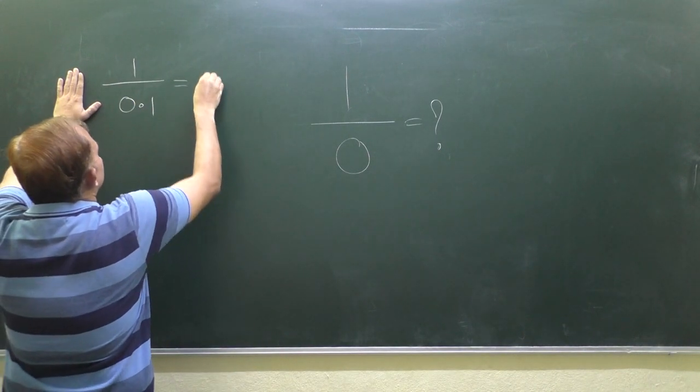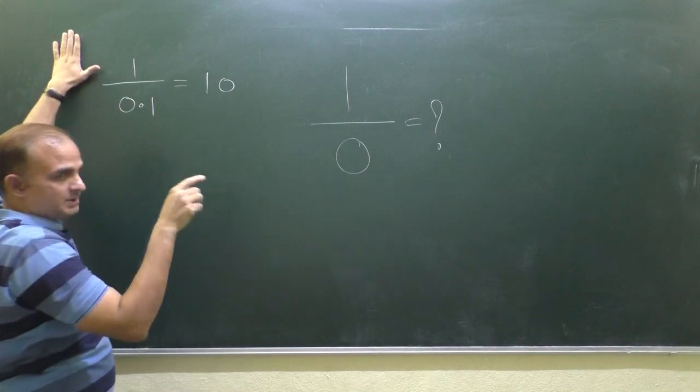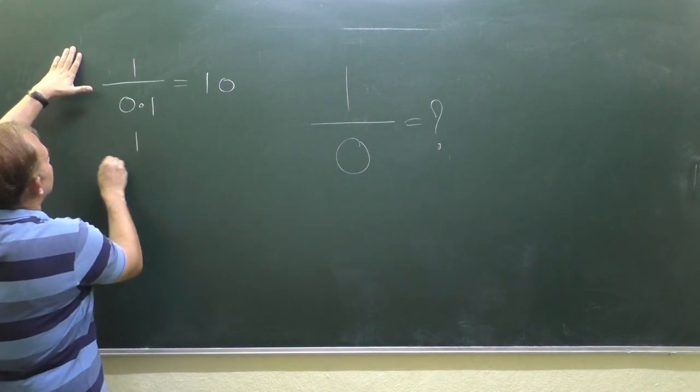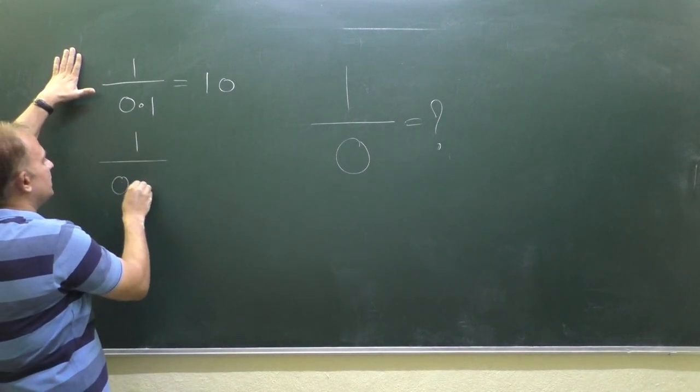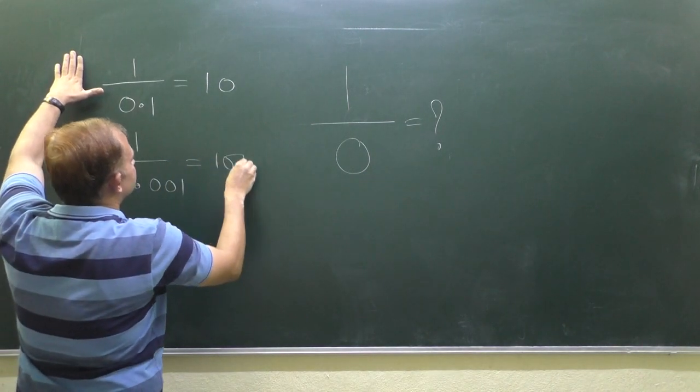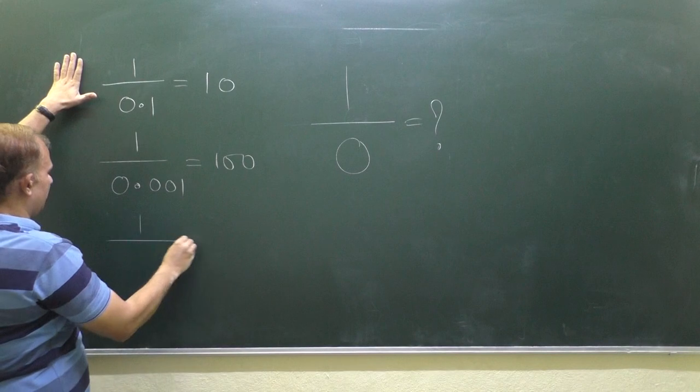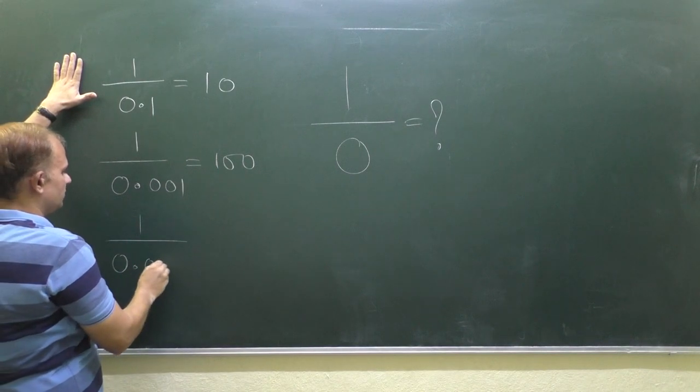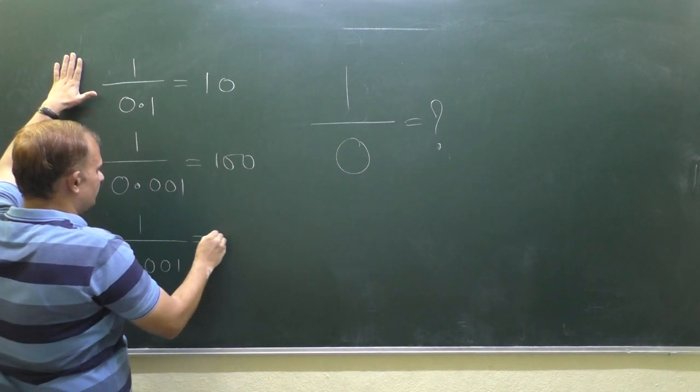1 upon 0.1 is what? It is 10, you can calculate. 1 upon 0.01, what is this? This is 100. And if you write 1 upon 0.001, what is this? Thousand.